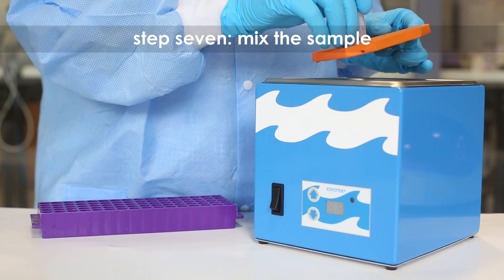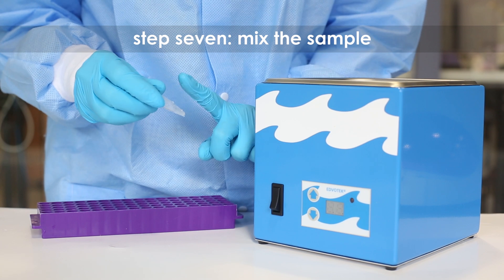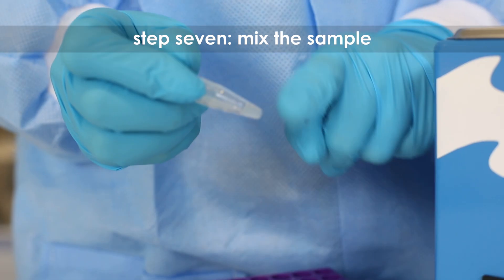Step 7: Mix the sample by vortexing or flicking the tube vigorously for 20 seconds.